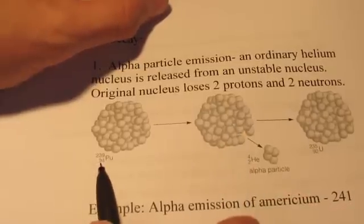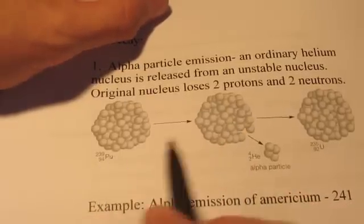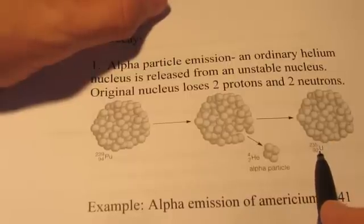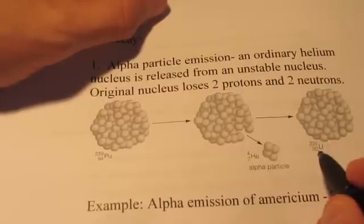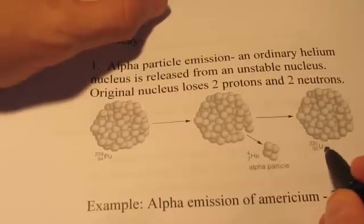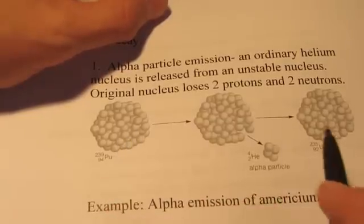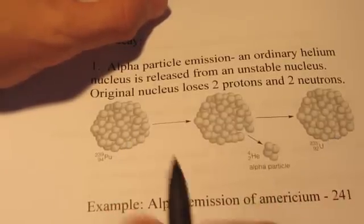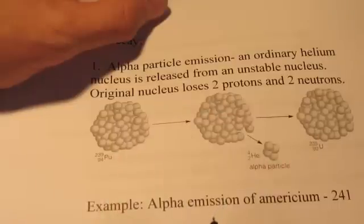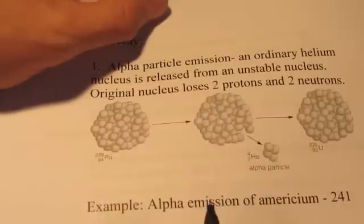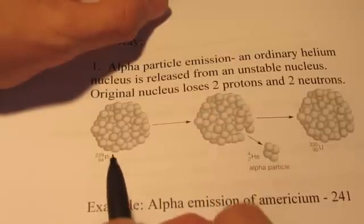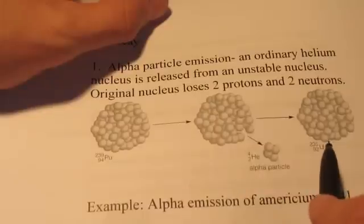Now, of course, that's going to change the makeup of the nucleus. Instead of having 94 protons like plutonium did, it will now only have 92 protons. And the element with the atomic number 92 is uranium, so we have actually transmutated an atom of plutonium into an atom of uranium, which is not an ordinary chemical reaction. These are nuclear processes, and in that process, we can actually change the makeup of the nucleus.